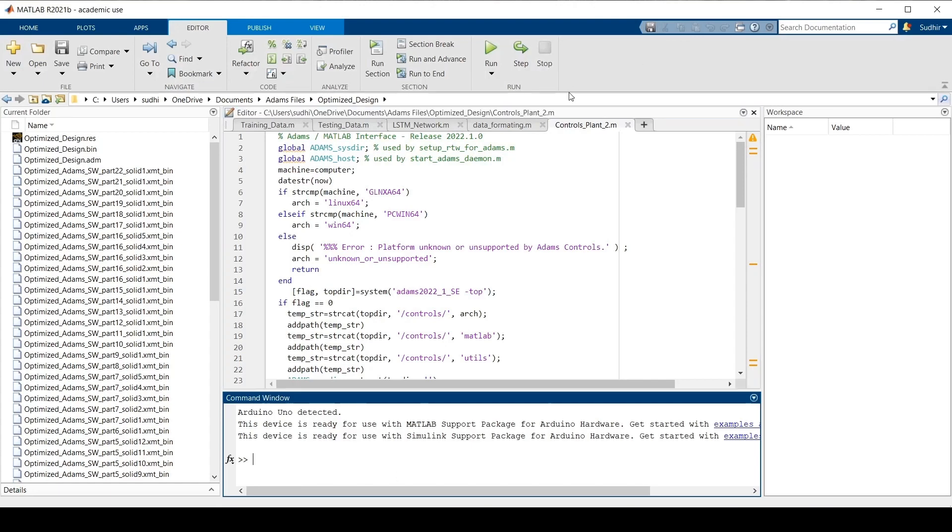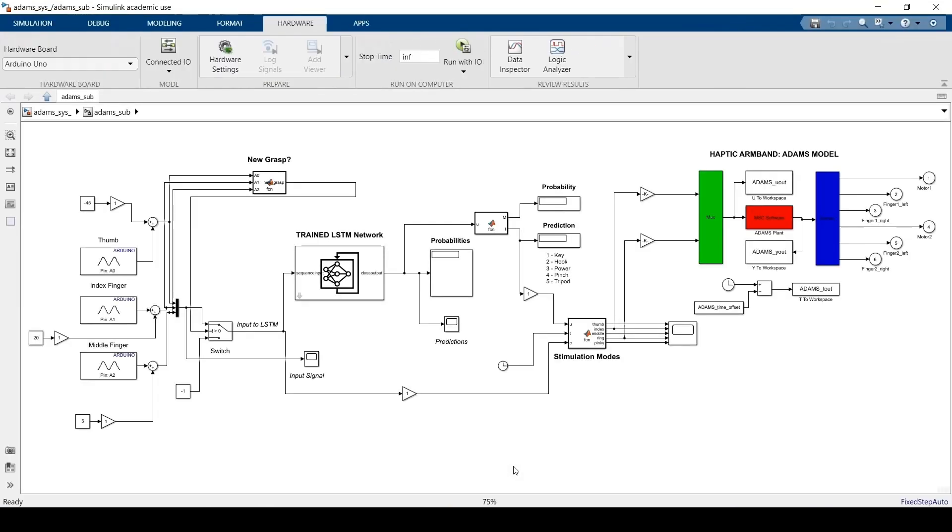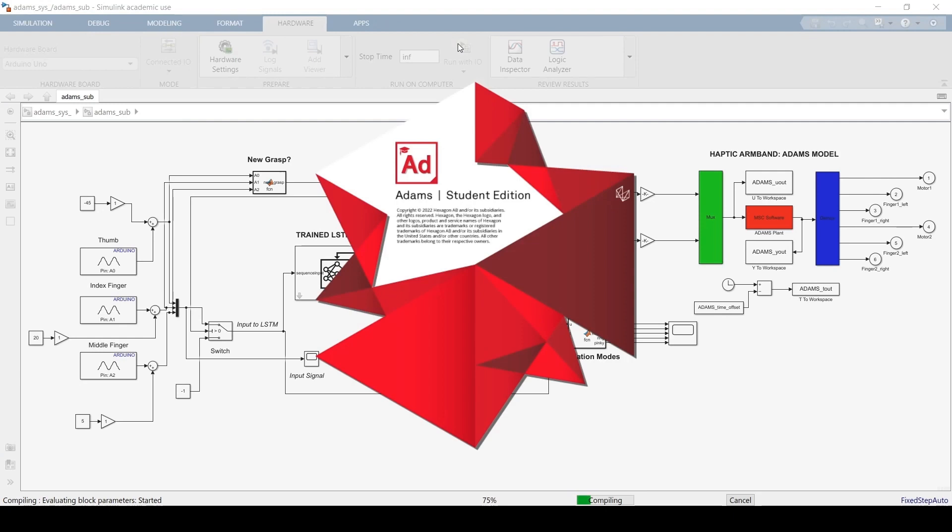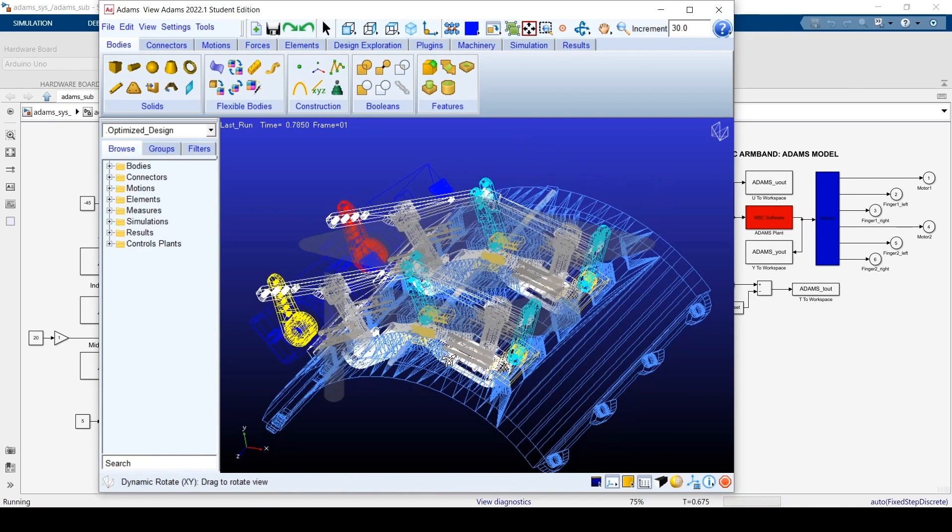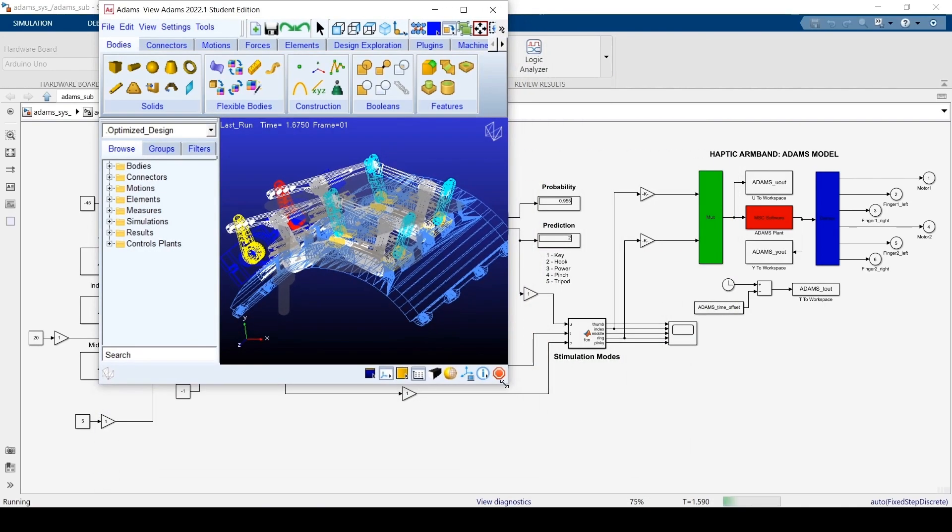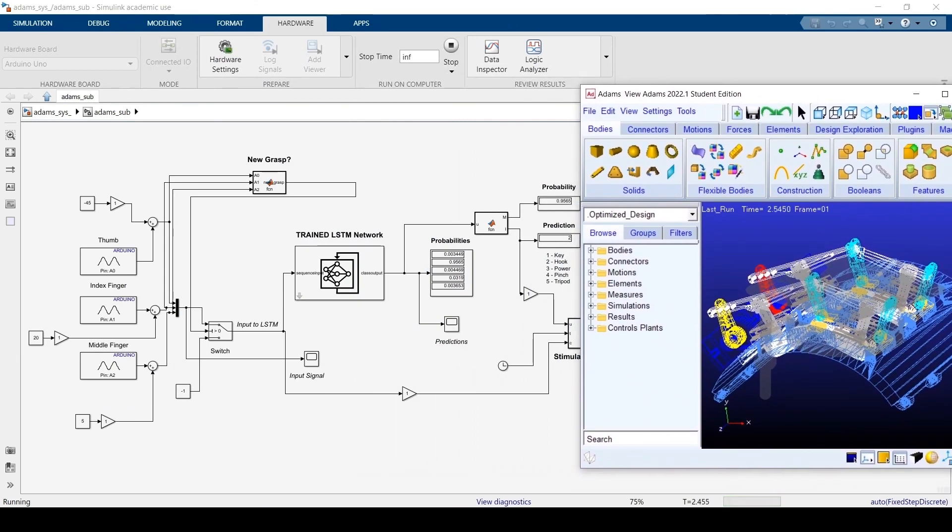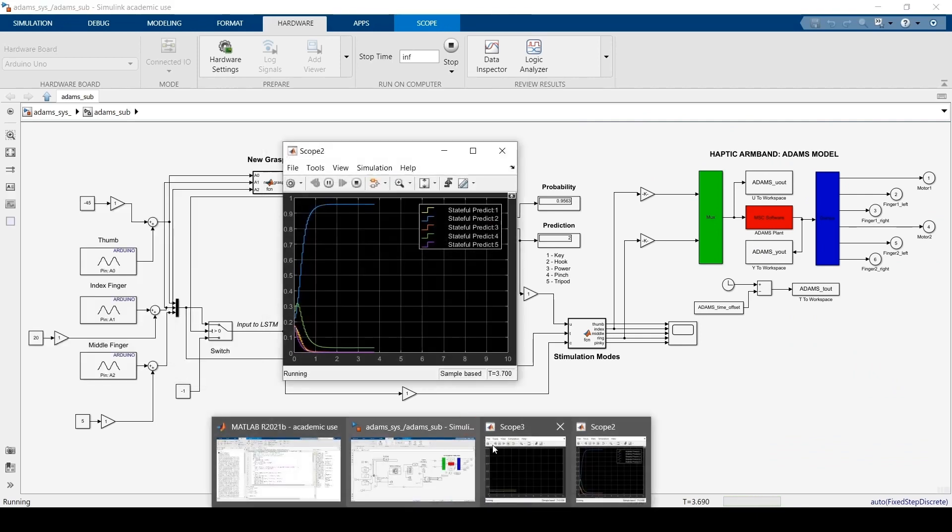Here I will now run the Simulink model so we can see. Once we start the simulation it will load up the Adams model and once the model is loaded the simulation begins. Here we can see that even though we are already making a prediction there is no output yet to the Adams model because we have not yet initiated a grasp.